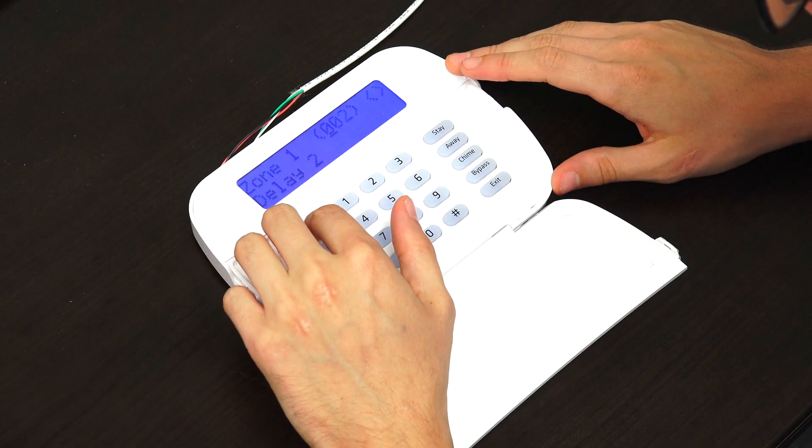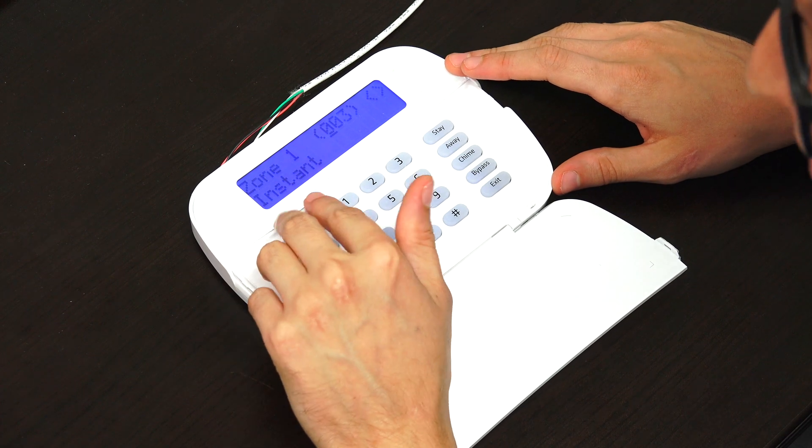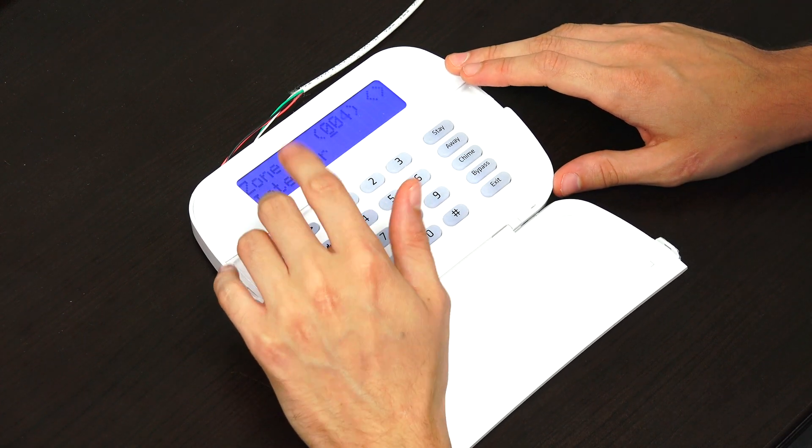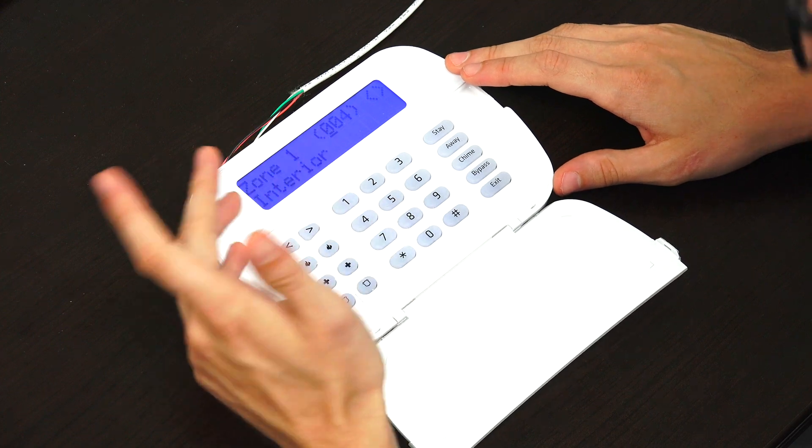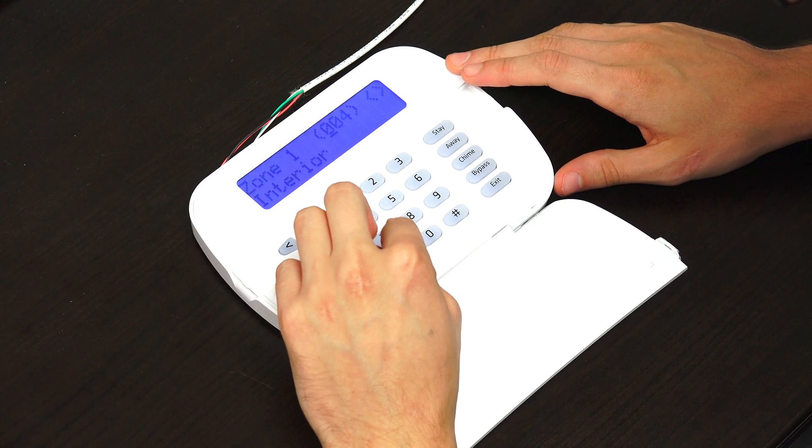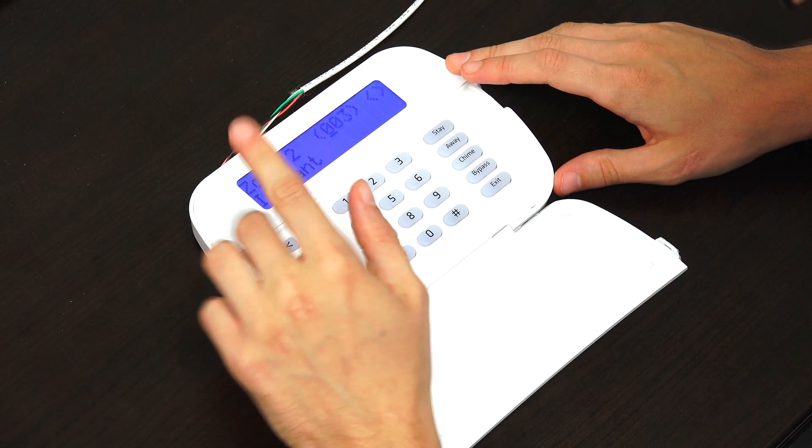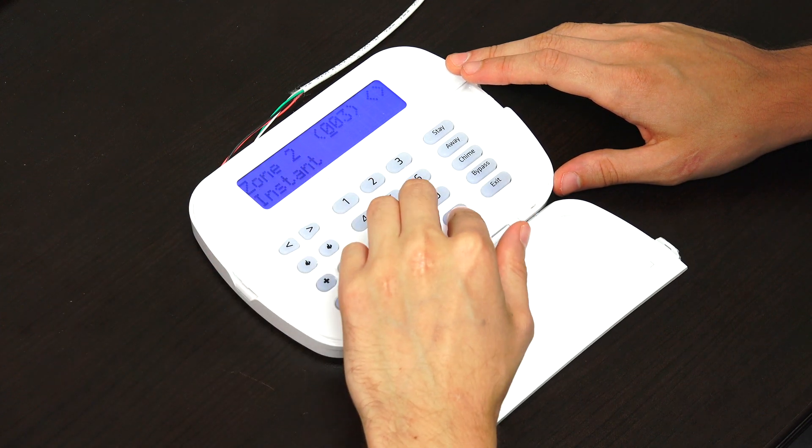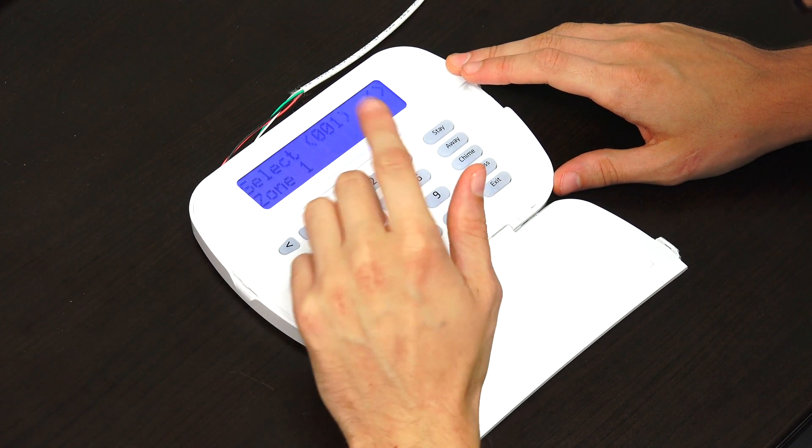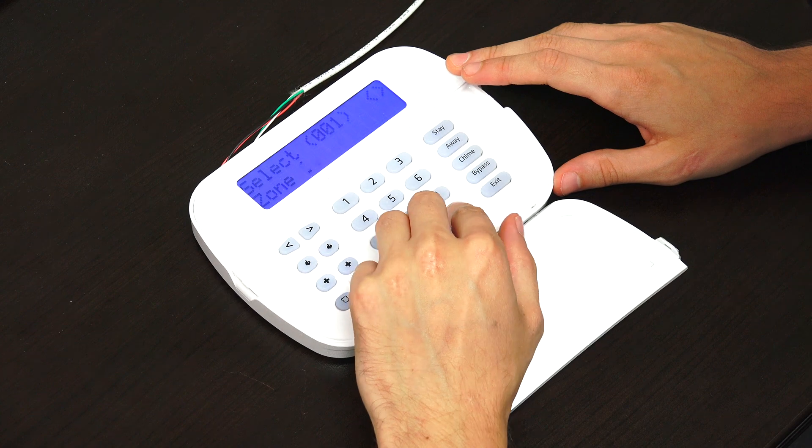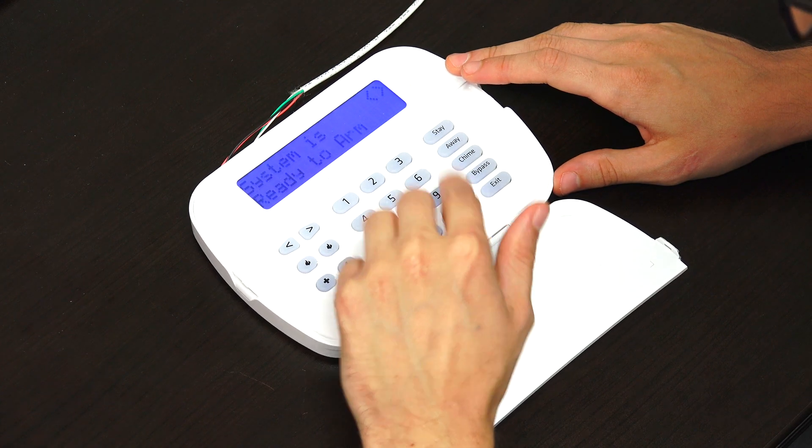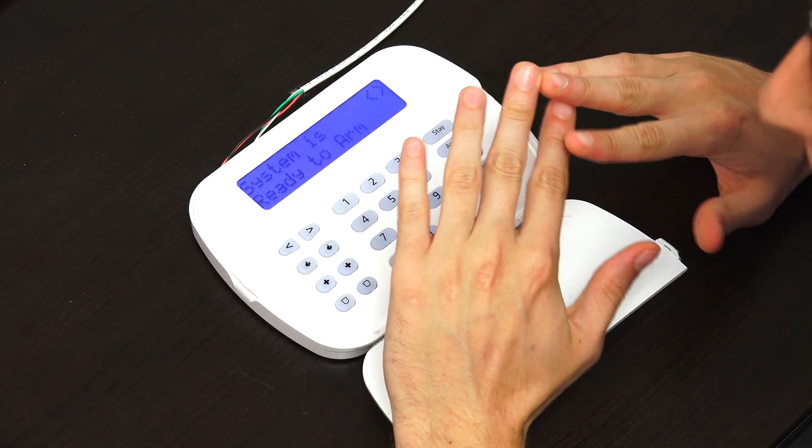And then it's going to ask us for the three-digit zone definition. Now, you should look in the manual for your Neo system to see the complete list of zone definitions. But if you scroll through them, you can see a couple of delay options, like entry exit delays, instant, interior. So we'll go with interior. And we'll press star to confirm it. And then it's going to take us to the next zone. But we don't need to set up a second zone right now. So we'll just press the pound key to go back. So that's how you would assign a zone definition.